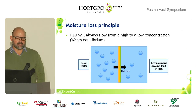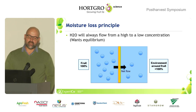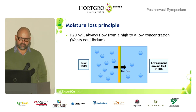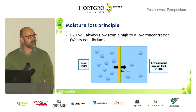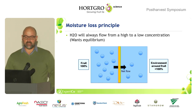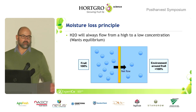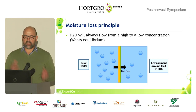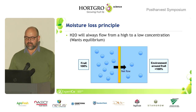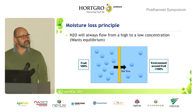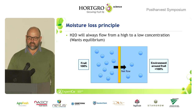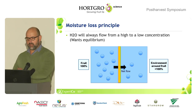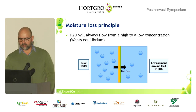One of the principles is that water always flows from high to low concentration. If you look at that diagram, your fruit is at 100% humidity, while your environment — your orchard, packhouse, cold room — is less than 100% humidity. So there's always a net flow from your fruit outwards, and that's not ideal.